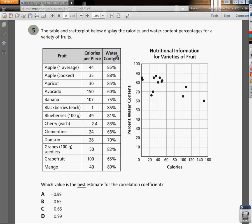Okay, this is the Algebra 2 EOC practice question number 5. It says the table and scatter plot below display the calories and water content percentages for a variety of fruits.